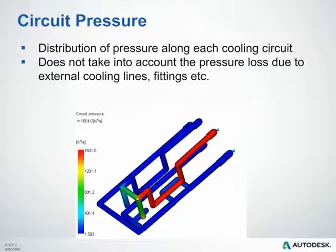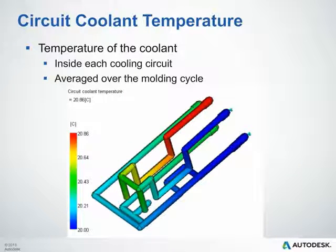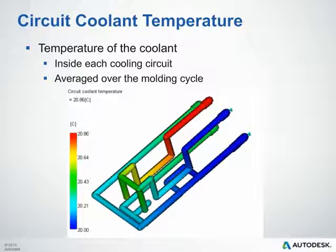You also have access to a circuit coolant temperature result, which shows the temperature of the coolant within your circuits for each coolant circuit line, averaged over the mold cycle. This is the plot you'll use to confirm that the difference between inlet and outlet temperatures is within 2 to 3 degrees Celsius of one another for optimum heat extraction. You can also use it to identify areas of the tool where you're pulling a lot of heat out and may need additional cooling.